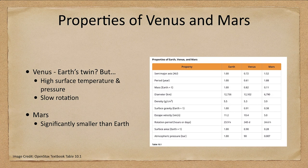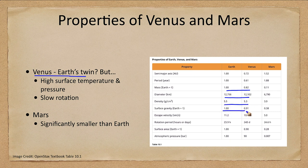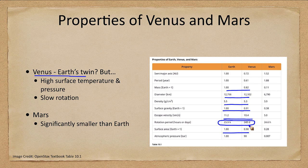Let's look at some of the basic properties of these two planets. Venus is almost a twin of Earth — it has a mass only a little bit less than Earth's, with very close diameter, density, gravity, escape velocity, and surface area. The things that are different are the rotational period — Earth takes just under 24 hours while Venus takes 243 days — and the atmospheric pressure, which is 90 times that of Earth's atmosphere.